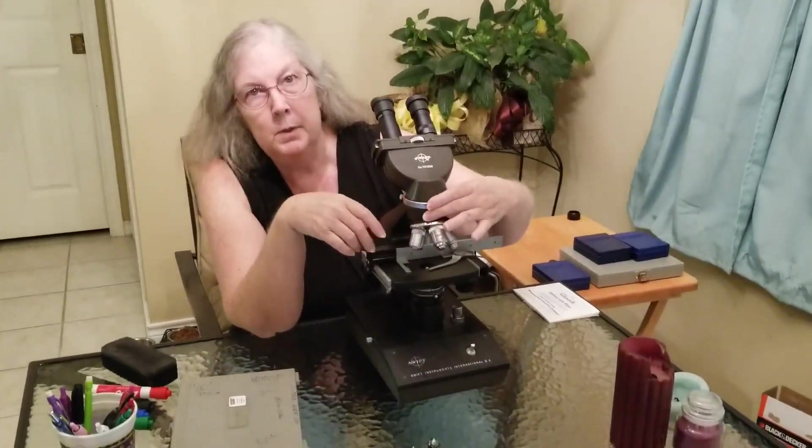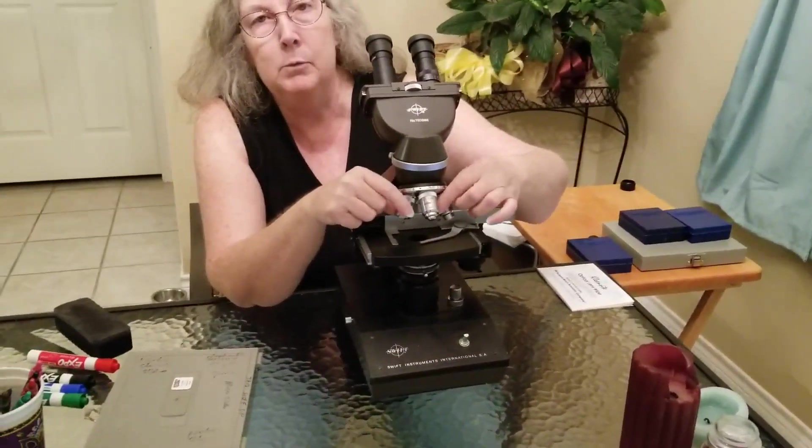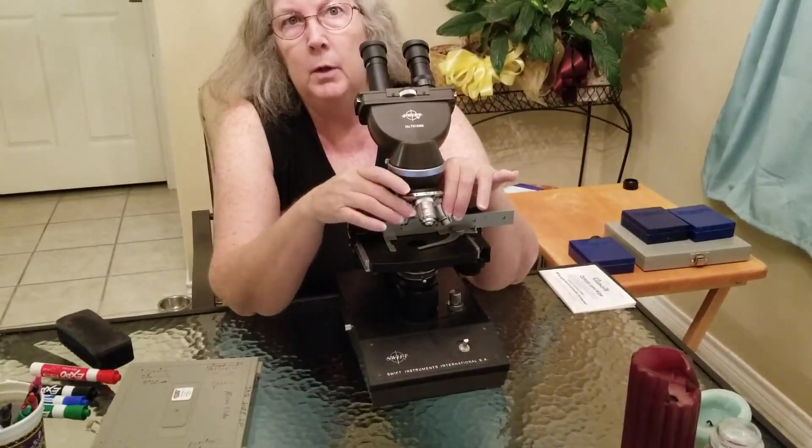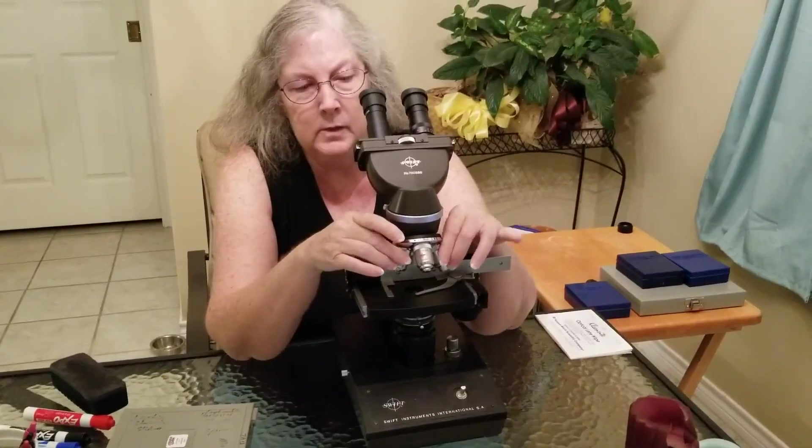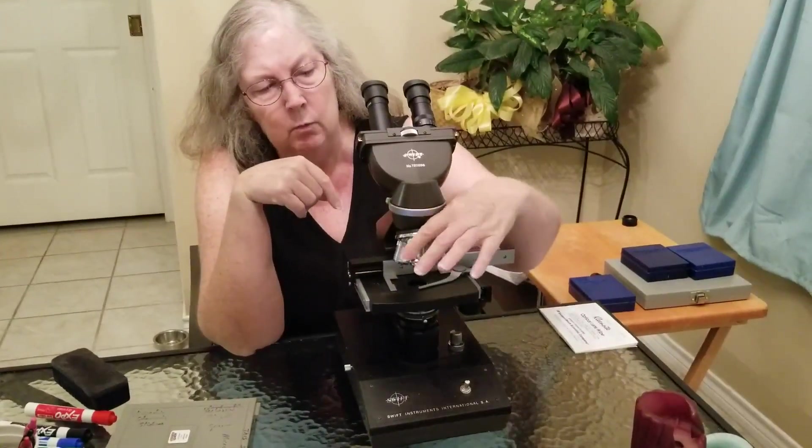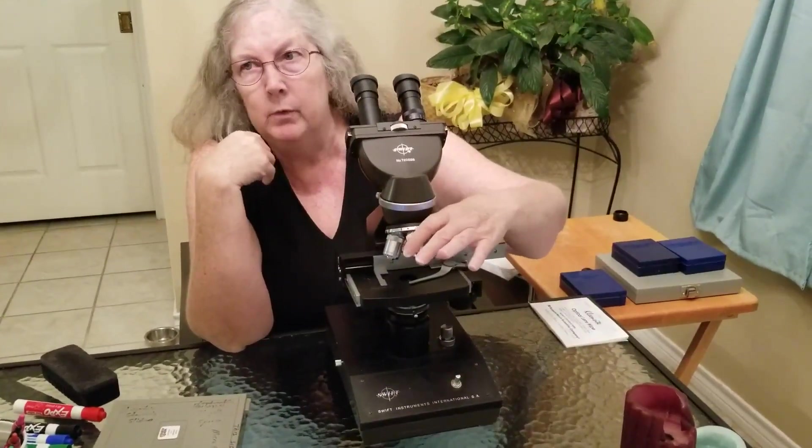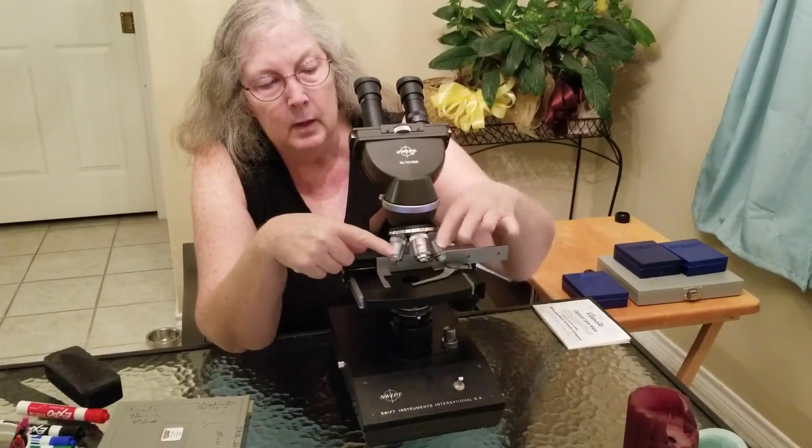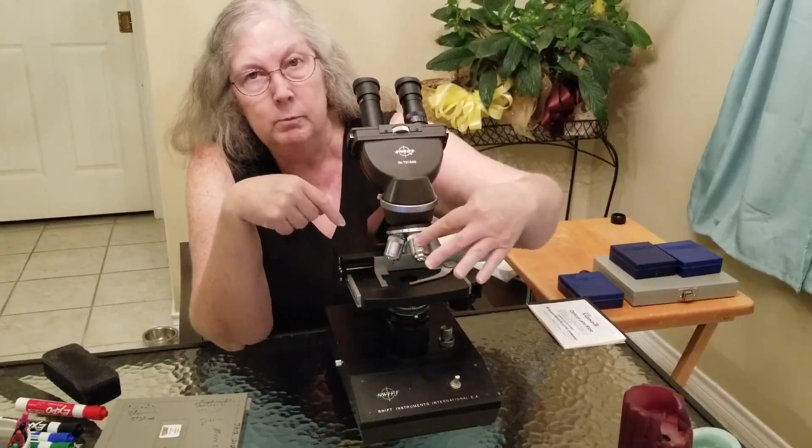This is your nose piece that's holding the objective lenses. Depending on the microscope you have there may be three. Mine has four objective lenses and this does move and rotate around so sometimes they'll be referred to as a revolving or rotating nose piece. And these are your individual objective lenses.